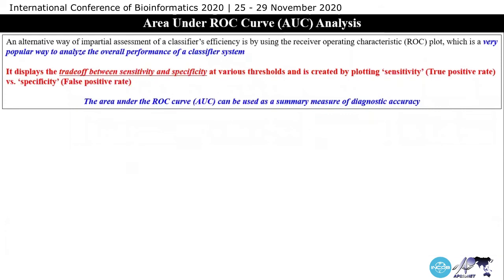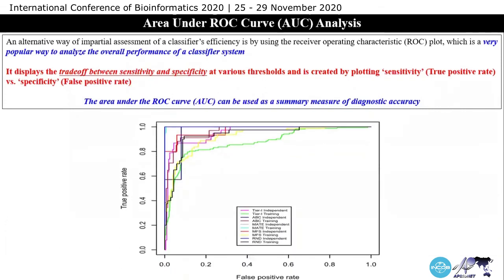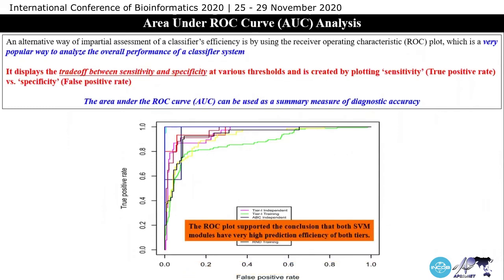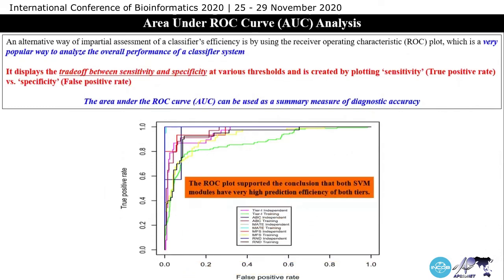This is the ROC plot. As you can see, all the models lie near one, which concludes that both SVM models have very high prediction efficiency at both tiers.